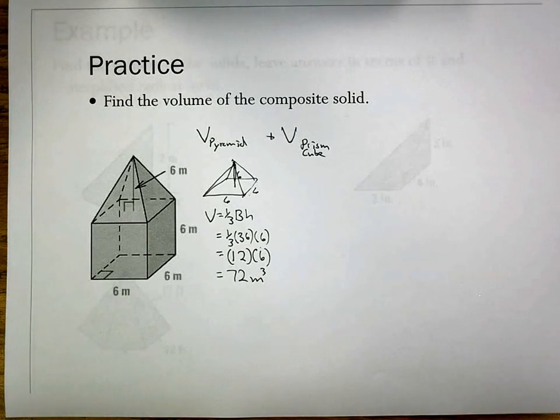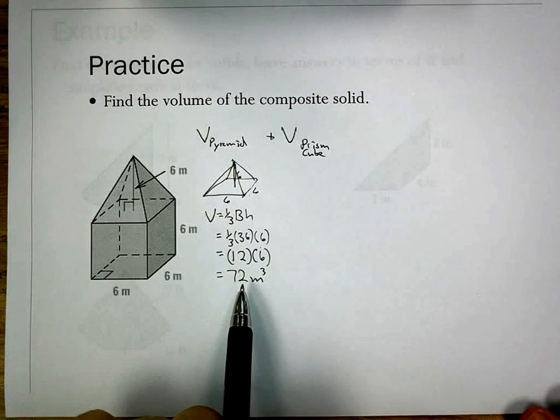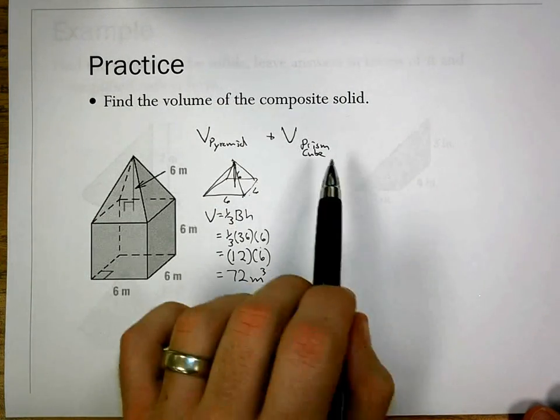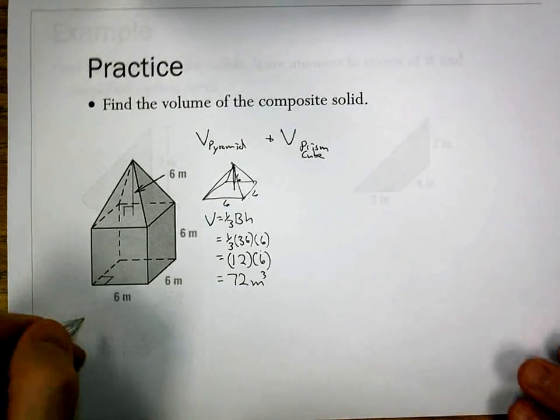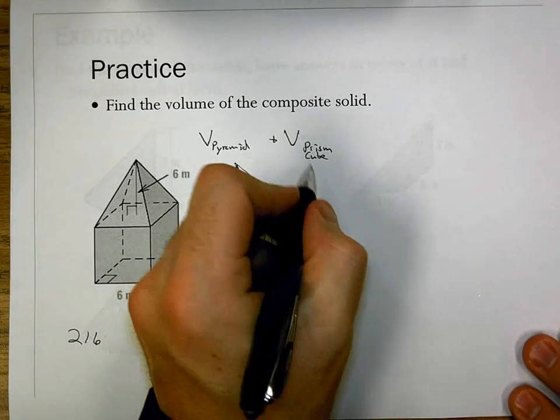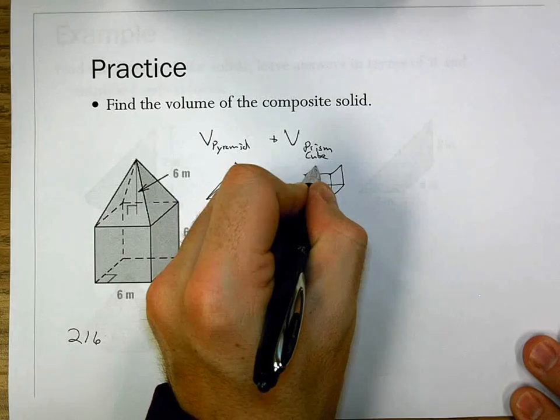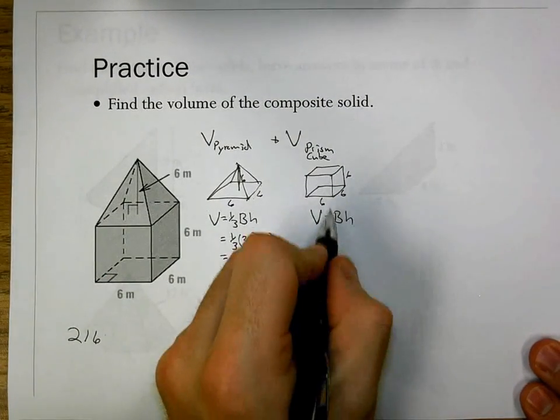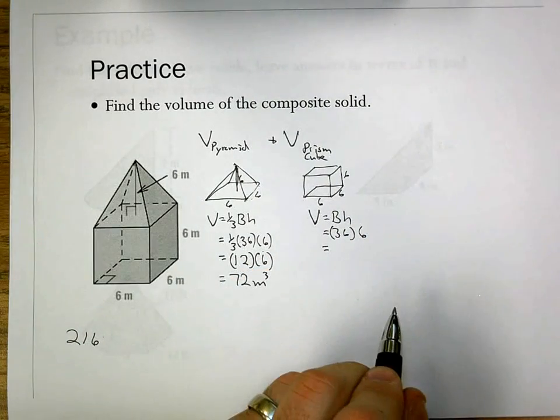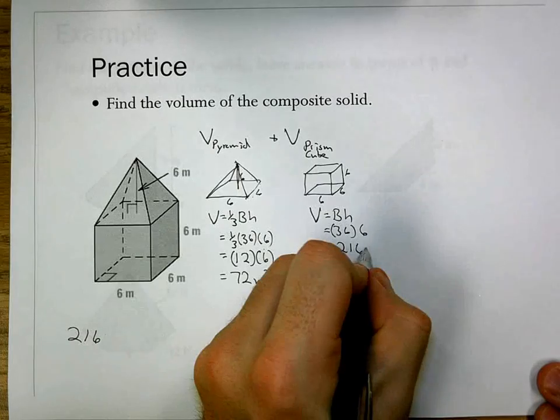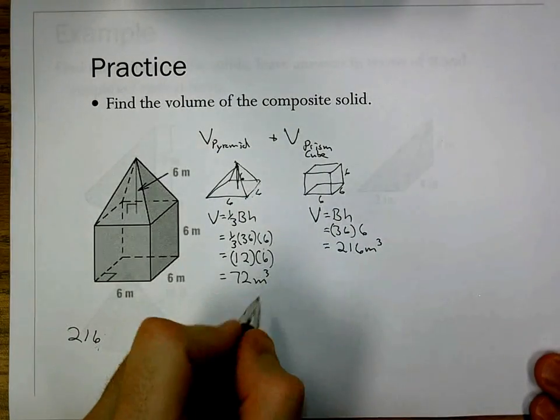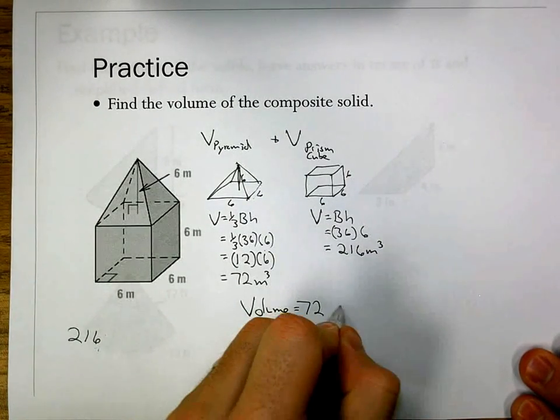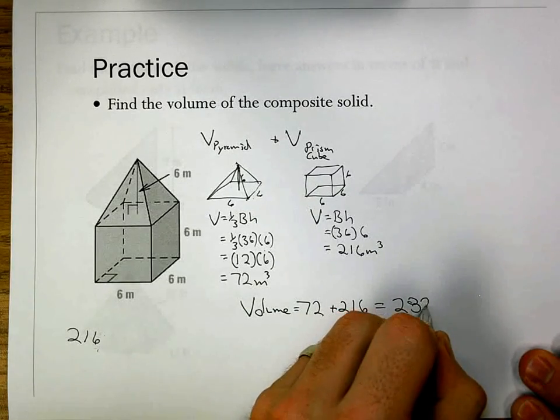This is the opportunity we have here. The base is the same, the height is the same. So a prediction we could have is that the volume of this pyramid, if I multiply that by 3, is that going to be the volume of the prism? Well, 72 times 3 is 216. So let's write that off to the side and see if that's what we actually get. Volume of the prism: my base is 6 by 6 or 36, my height is 6. 36 times 6 gives us 216. So it worked out here, it was in fact triple. To find the total volume, I'm going to do 72 plus 216, which gives me 288 meters cubed.